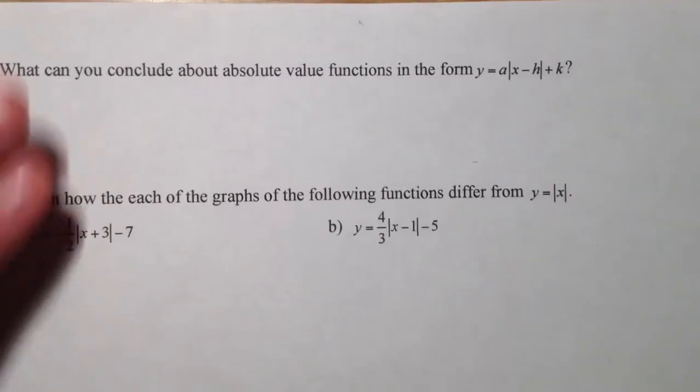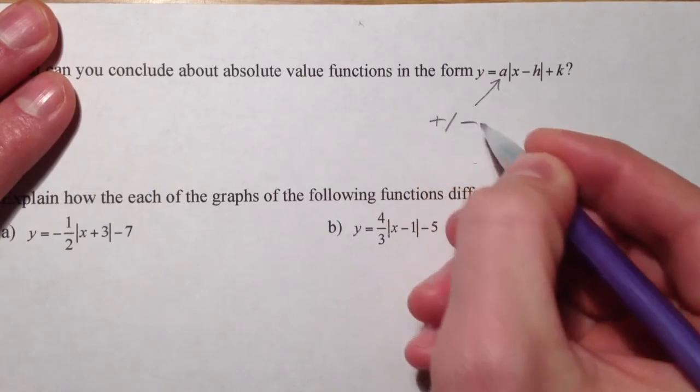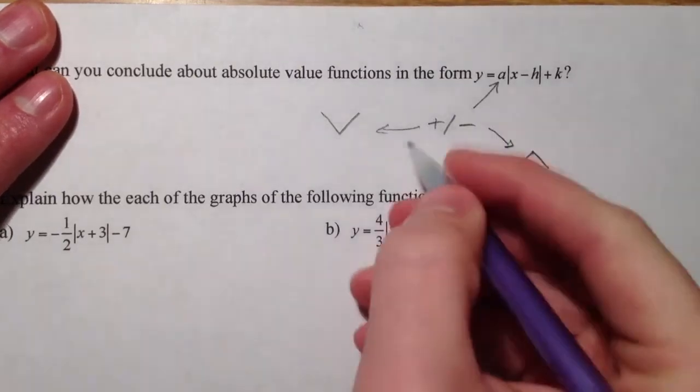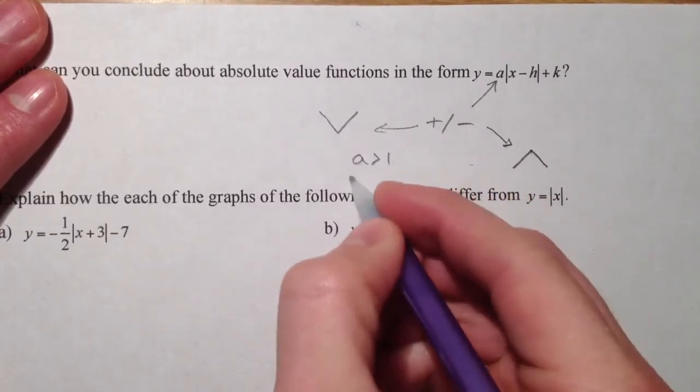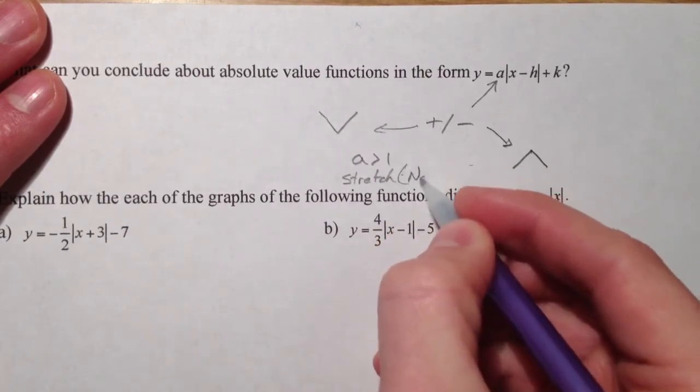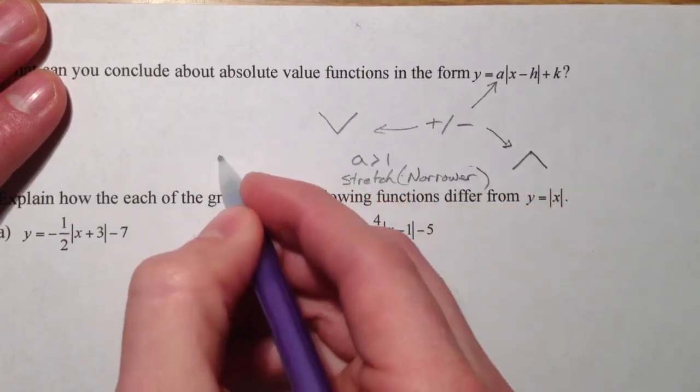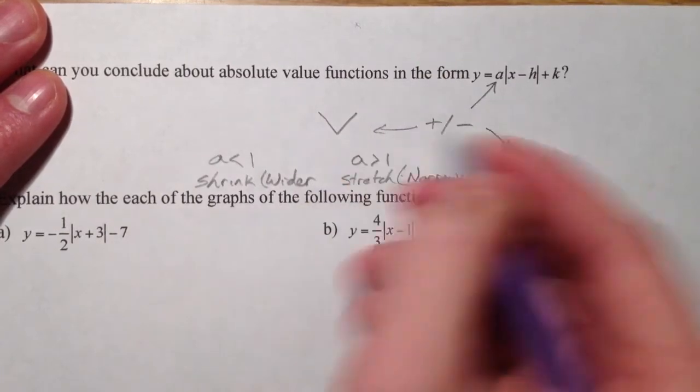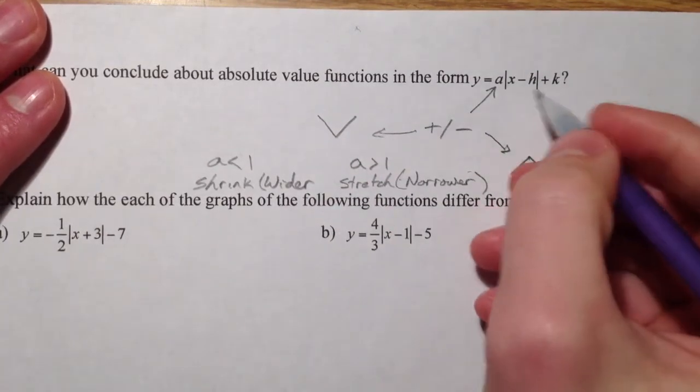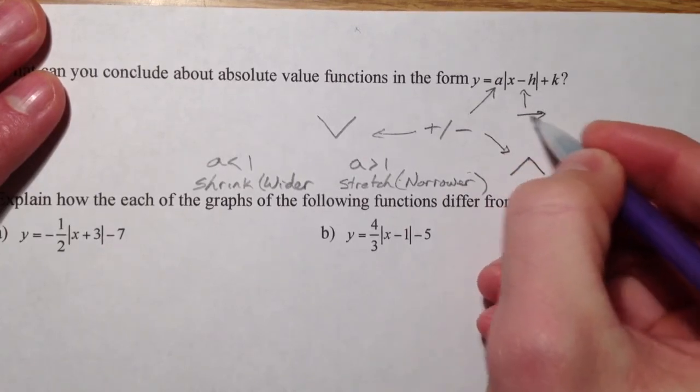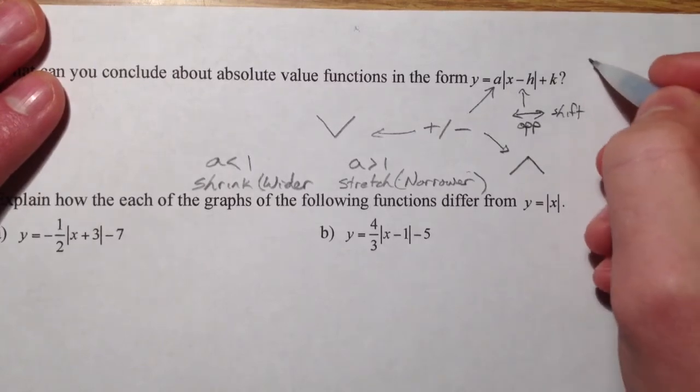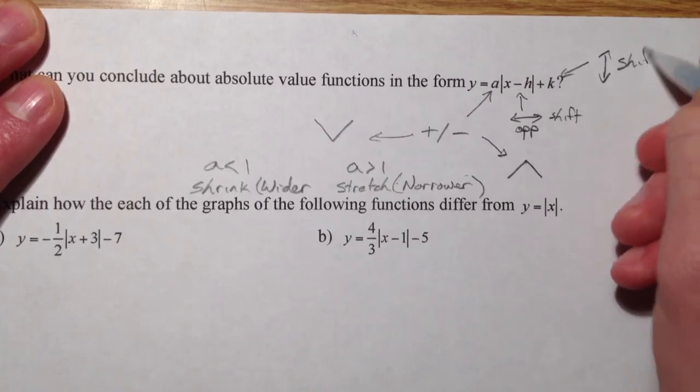All right. So, sort of concluding what we get with absolute value, just like we did with all of our other functions. A can be positive or negative. If it's positive, it opens up. If it's negative, it opens down, just like parabolas. And it's, if A is bigger than 1, it's a stretch, narrower. And if A is less than 1, it's a shrink, really, or wider. And that is, all of those are the exact same thing as they are with parabolas, and with any function, really. This always moves it left and right, opposite of what we think. And K is always an up and down shift, not opposite.